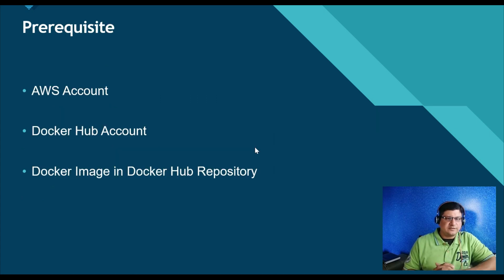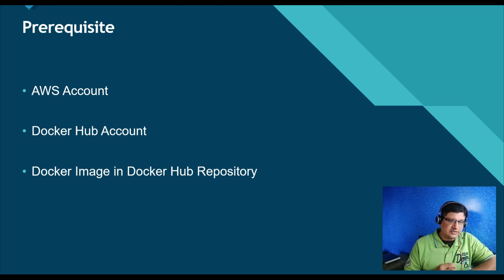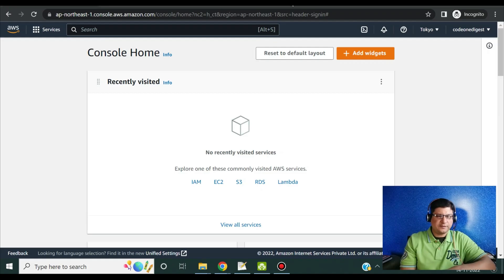Before we proceed, there are certain prerequisites. You must have an AWS account for this demo, you must have a Docker Hub account, and you must have a Docker image in that Docker Hub repository because we are going to use that image to deploy. Or you can use the image I'm showing in this demonstration — you can run the same image and deploy it in your AWS ECS cluster.